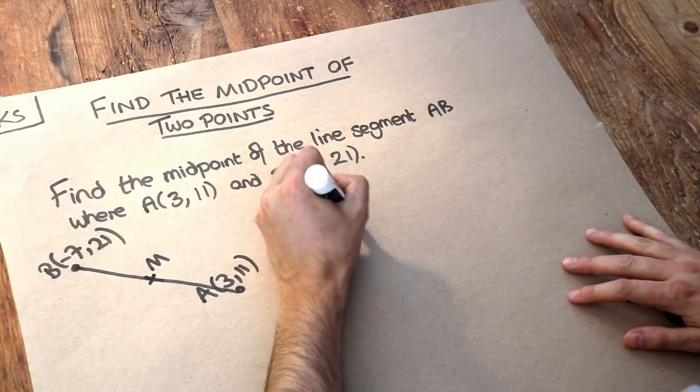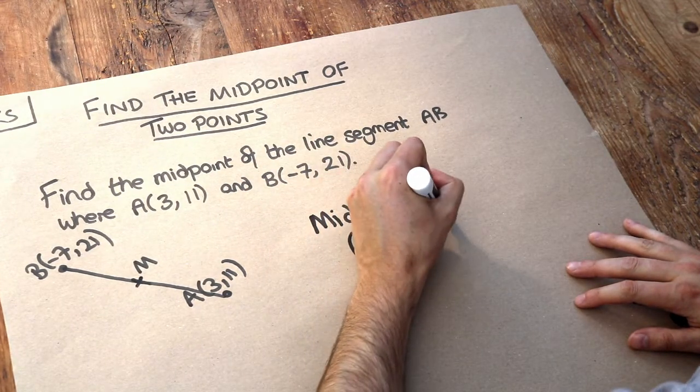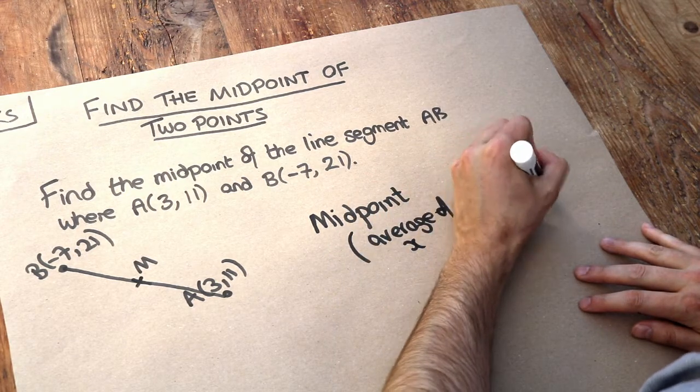So for midpoint, if you want to make some notes, you just do the average of the x values and you do the average of the y values for the y value.